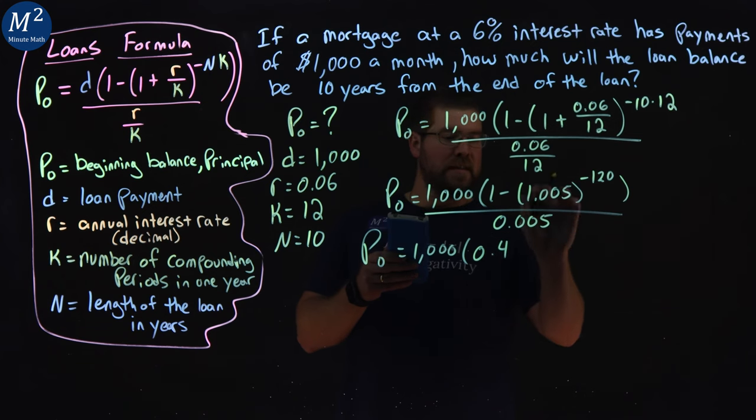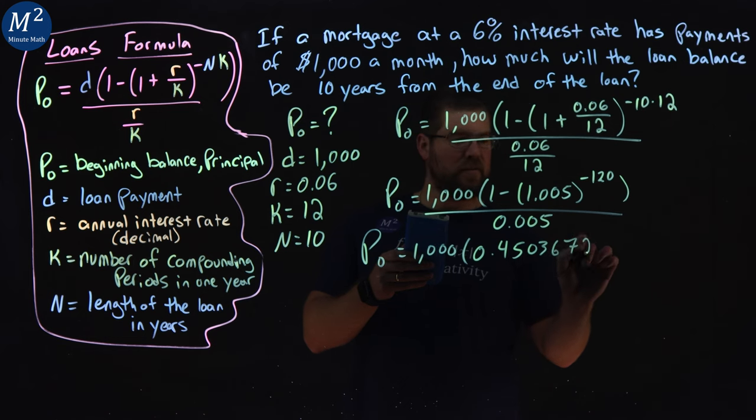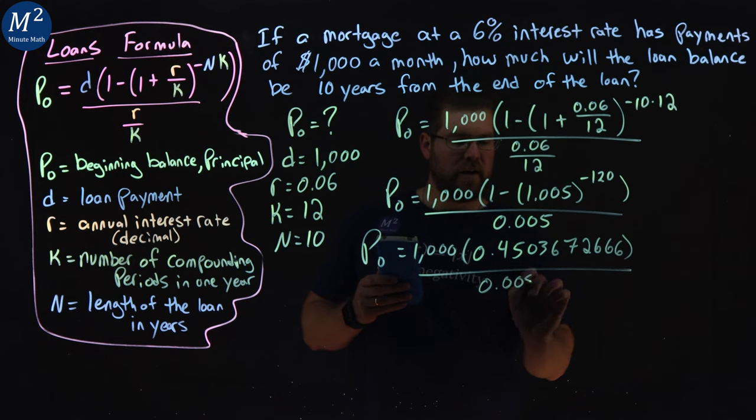1 minus that value gives me 0.4503672666, over 0.005.